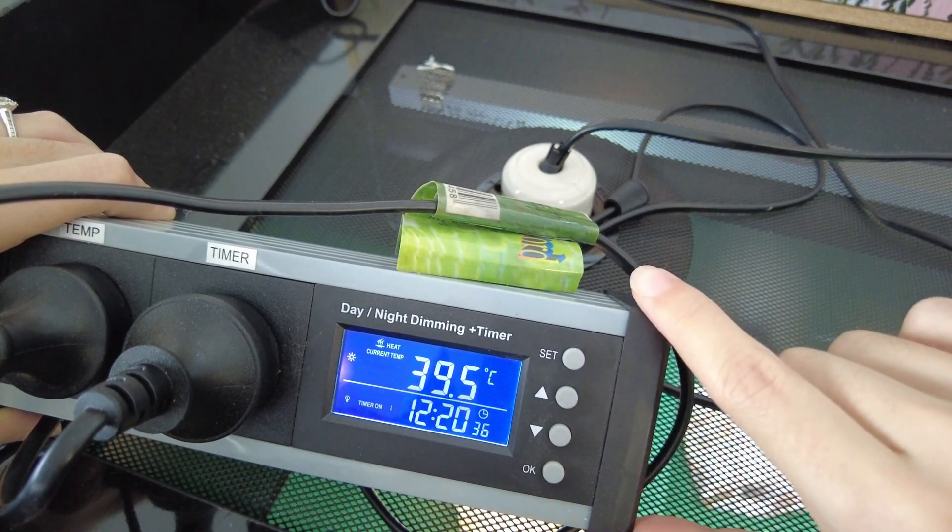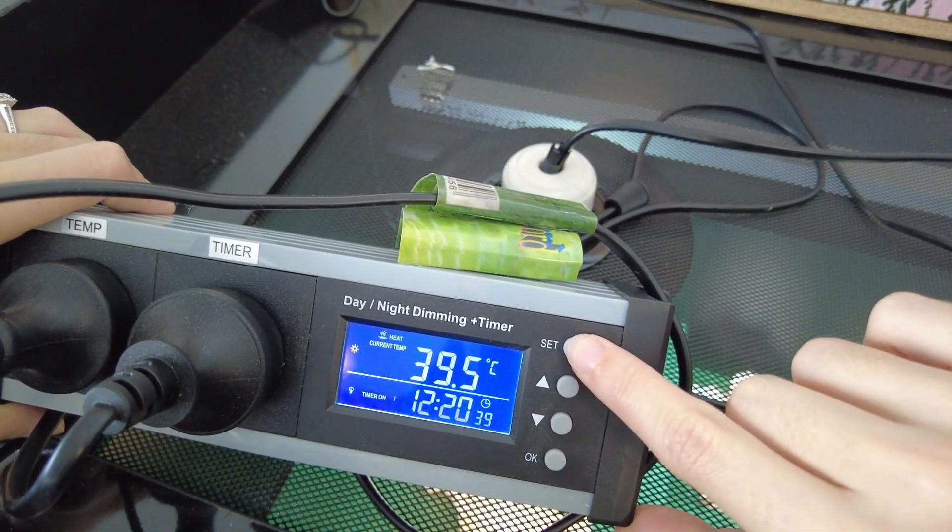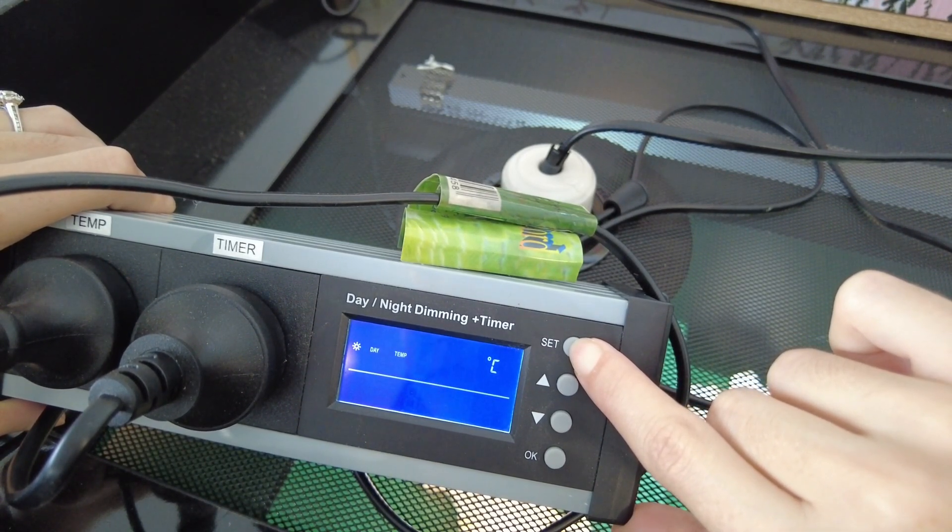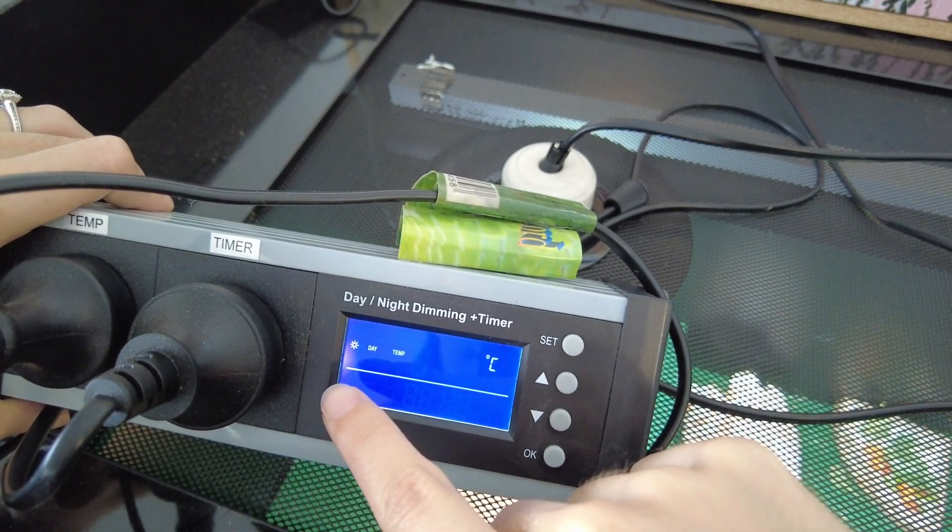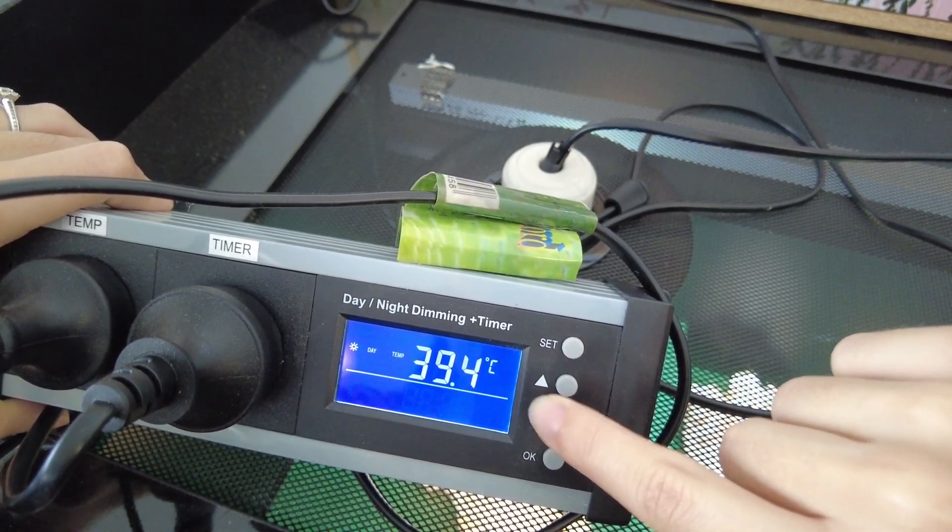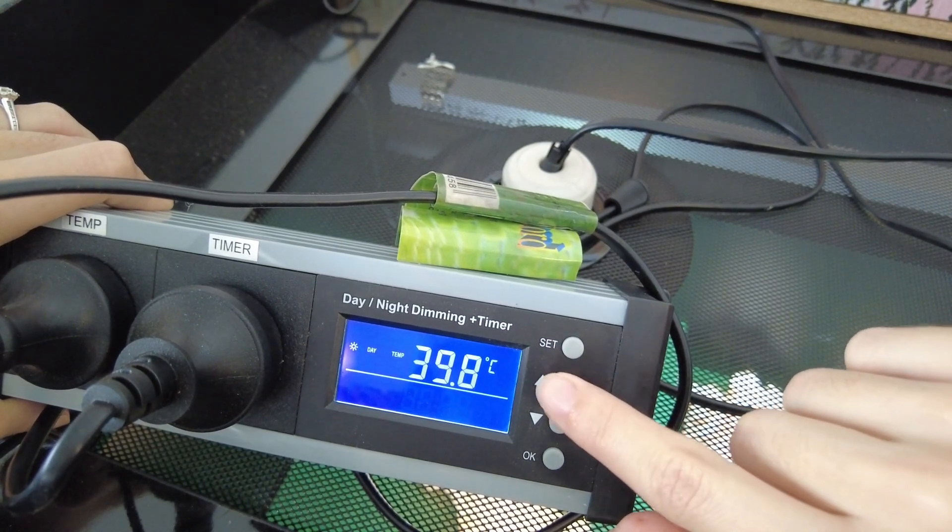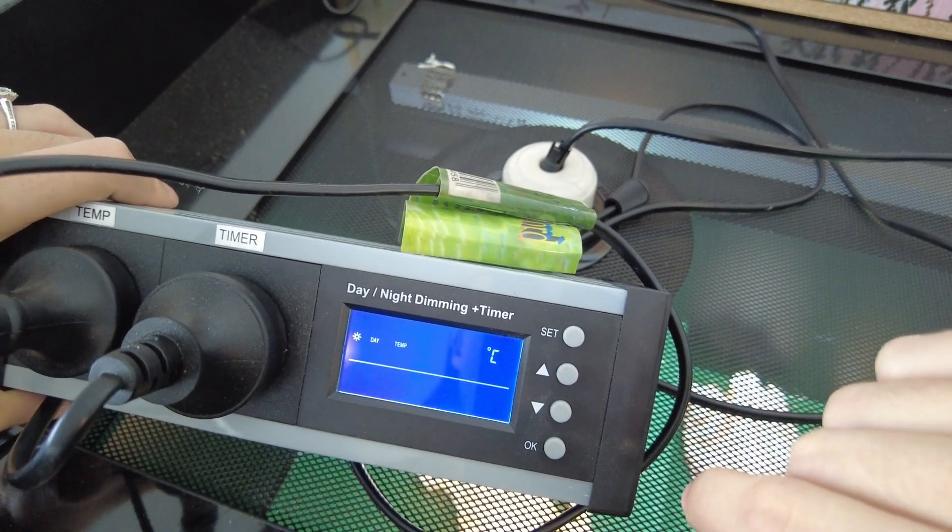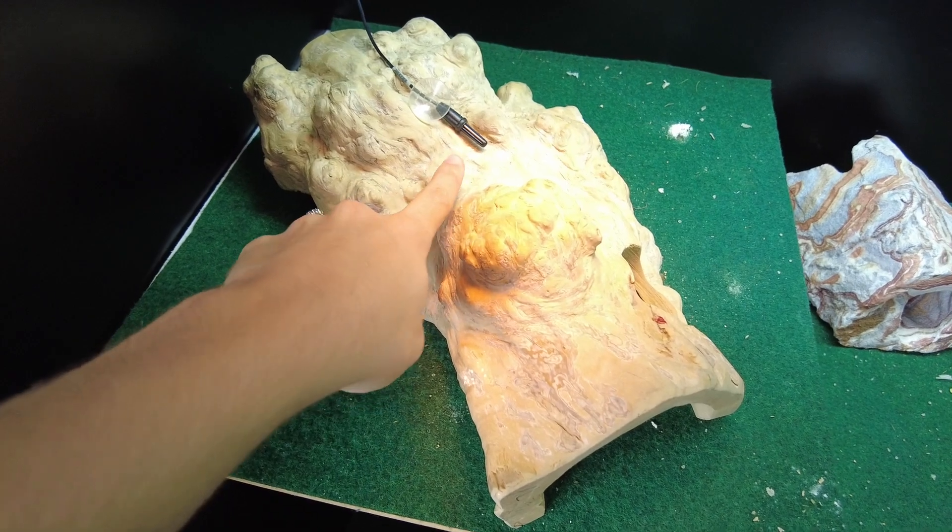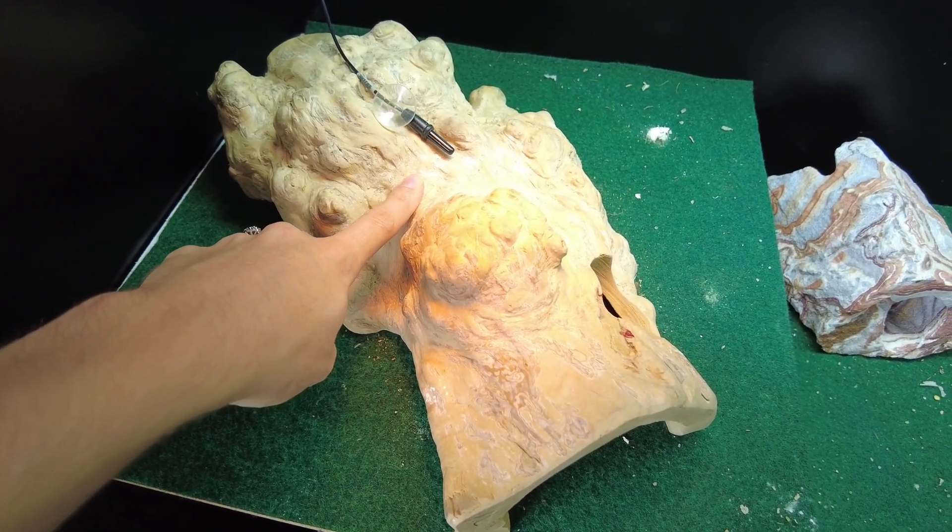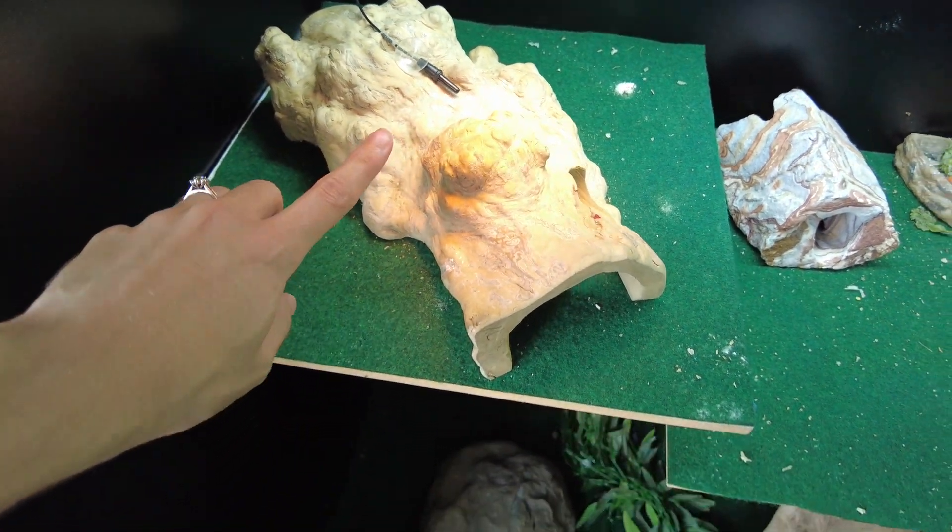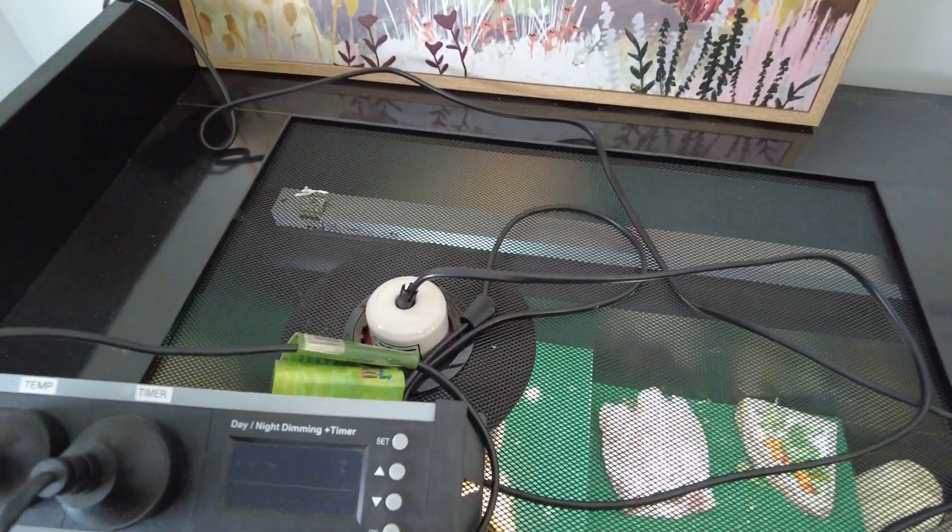So the first thing that we'll edit is our temperature settings, so let's hold down set again. The first one that we've got is our daytime setting so it's got the little sun and it says day. We're going to use the up and down arrows to edit how many degrees we want it to be when it's daytime in here. So I've got mine set to 40 degrees and what that means is this little probe here, wherever you put that, it's going to be measuring the temperature. If it's lower than 40 degrees it's going to tell the heat lamp to ramp it up a bit, and if it's too high it's going to dim the heat lamp down and it's going to try and maintain a stable temperature of 40 degrees.